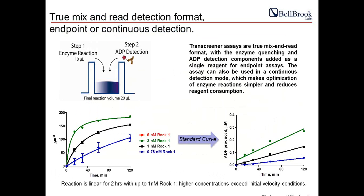Unlike the transient signals from coupled enzyme assays, the Transcreener signals persist for a long period of time — at least overnight, and in some cases stable for more than 24 hours — so plates can be read long after adding detection reagents. These properties make the Transcreener assay very easy to use in an automated HTS environment.